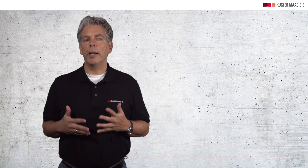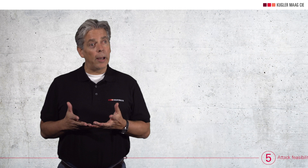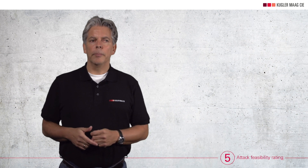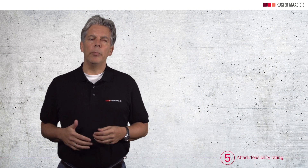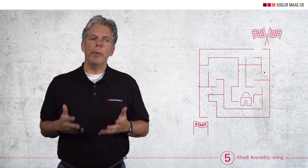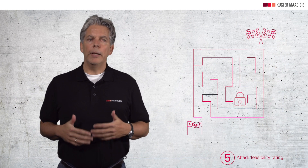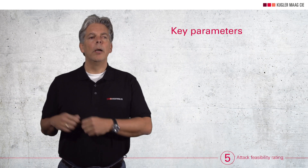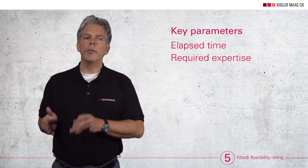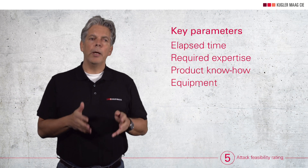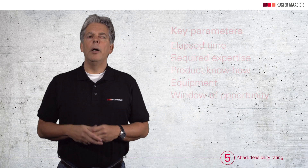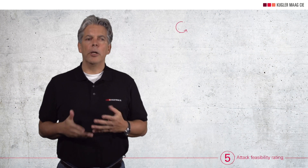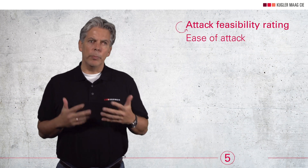Theory is fine, but is the attack realistic? Number 5 points us to the next step: the attack feasibility rating. In practice, not every attack can be conducted — maybe encryption makes it unlikely. Therefore, we now look at the actual attack potential. There are five key parameters for your evaluation: elapsed time, the required expertise and product know-how, as well as equipment and the window of opportunity. Once we know whether an attacker can conduct an attack successfully, we have achieved target number two: rating of the feasibility of an attack.